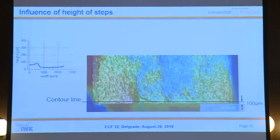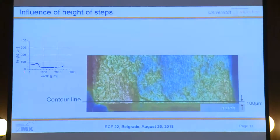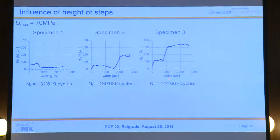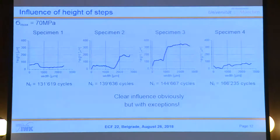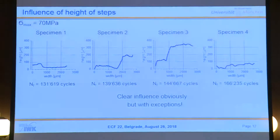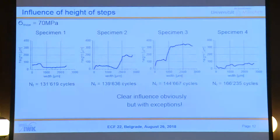The next analysis looks at the contour line: out of this three-dimensional picture we extract a contour line right at the root of the notch and plot the height over the width. You can do this for the whole group of the same stress scenario and see that the higher the step, the longer the cyclic lifetime. There is a clear influence, but not for all specimens — specimen 4 has the highest cyclic lifetime but no step at all, though its fracture surface is rougher than the others.